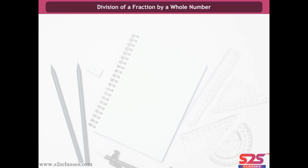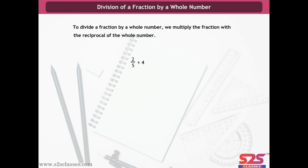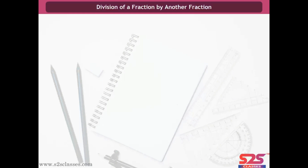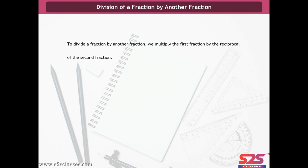Division of a fraction by a whole number: multiply the fraction with the reciprocal of the whole number. For example, 2/5 ÷ 4 = 2/5 × 1/4 = 2/20 = 1/10. Likewise, 4 and 1/5 ÷ 7 = 3/5. Division of a fraction by another fraction: multiply the first fraction by the reciprocal of the second. For example, 2/9 ÷ 5/3 = 2/9 × 3/5 = 2/15; 2/3 ÷ 7/4 = 8/21; and 2 and 3/5 ÷ 13/15 = 3.